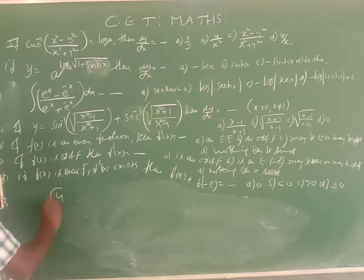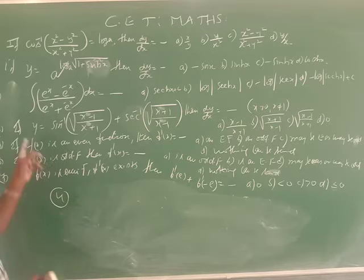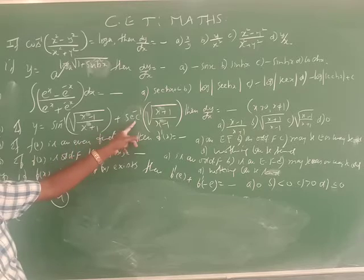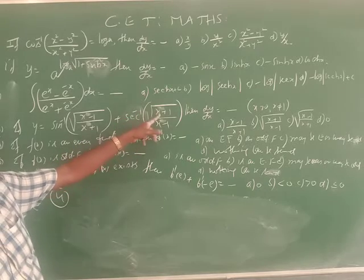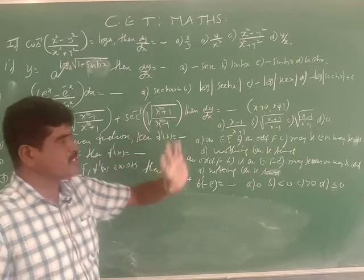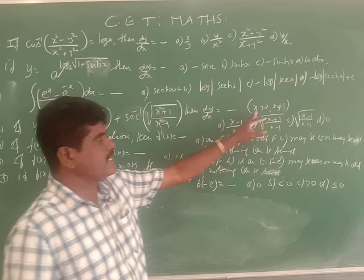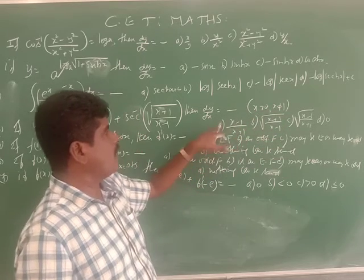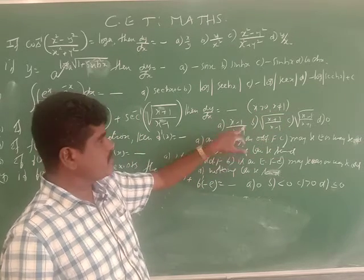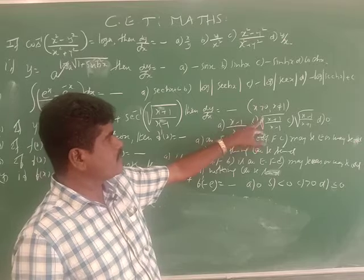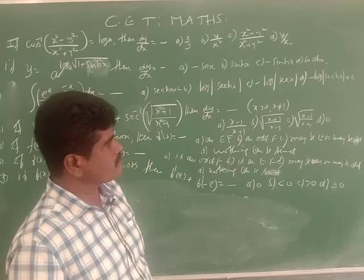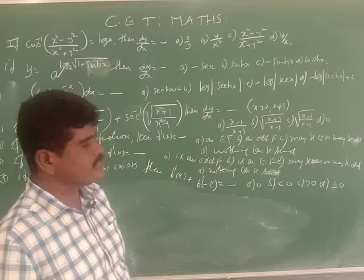Fourth question: if y = sin⁻¹(√((x−1)/(x+1))) + sec⁻¹(√((x+1)/(x−1))), then dy/dx equals — given x > 0, x ≠ 1. Option A: (x−1)/(x+1). Option B: √((x+1)/(x−1)). Option C: √((x−1)/(x+1)). Option D: 0.